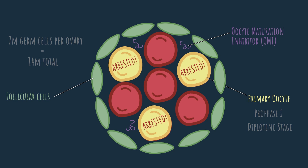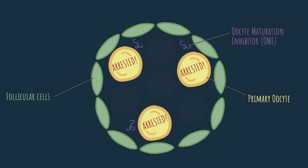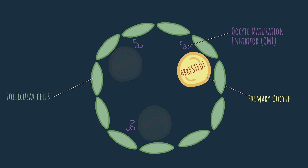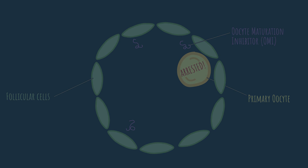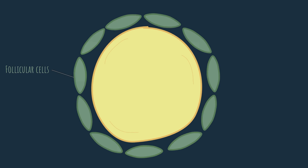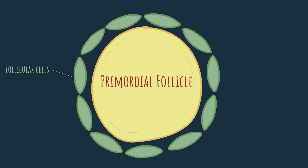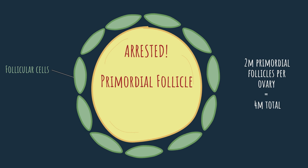Practically all oogonia will degenerate, and so will a large number of primary oocytes. The surviving primary oocytes will get upgraded — each one of them will get its very own shell of follicular cells. These primary oocytes surrounded by follicular cells are called primordial follicles, and a baby girl is born with two million primordial follicles in each ovary — so four million follicles in total.